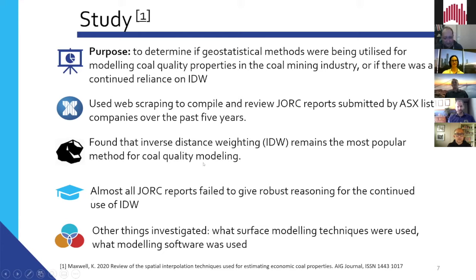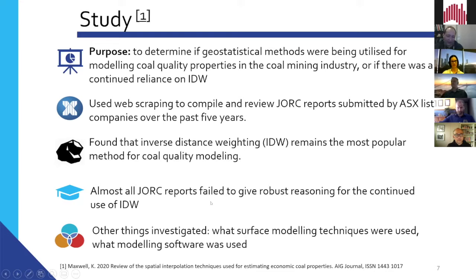And to no real surprise, I found that inverse distance weighting is still the most popular method for modelling quality properties. I also found that almost all JORC reports failed to give a robust reason for why they were using inverse distance weighting. There were a lot of generalist reasons like 'it's industry standard' or 'it's what was done previously,' but no real quantitative or robust reasoning for why they use inverse distance — despite there being a requirement to have a qualitative reason.